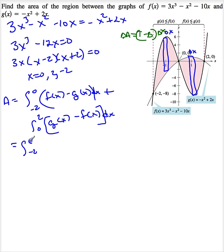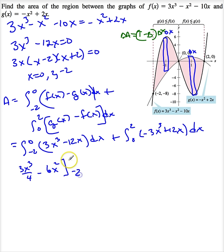So, let's look at this. This becomes the integral from minus 2 to 0 of 3x cubed minus 12x dx, plus the integral from 0 to 2 of minus 3x cubed plus 12x dx. So this is 3x to the fourth over 4 minus 6x squared, evaluated at negative 2 and 0. Now we're going to add that to negative 3x to the fourth divided by 4 plus 6x squared, evaluated at 0 and 2.